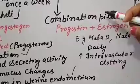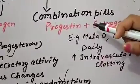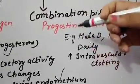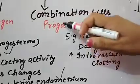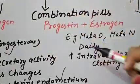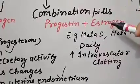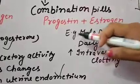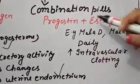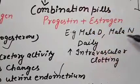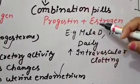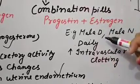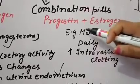In combination pills, there is a combination of two hormones — progesterone plus estrogen — both present in the female. These compounds act like the progesterone hormone. Examples you may have heard of include Mala D and Mala N — tablets that were taken daily by women. However, these are not very useful because there are many problems associated with them.